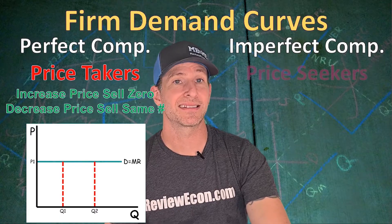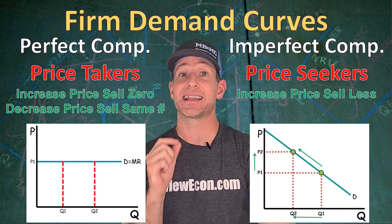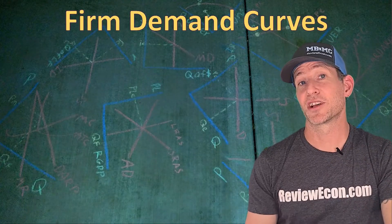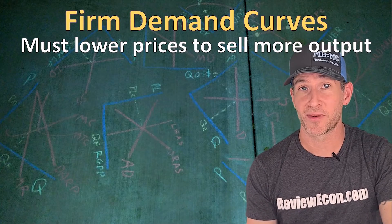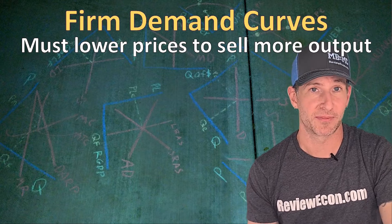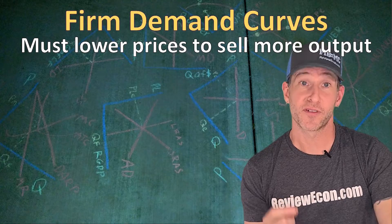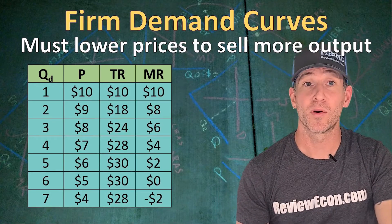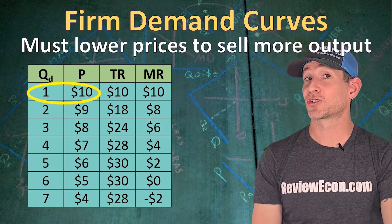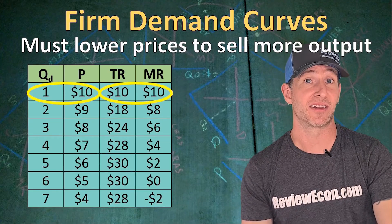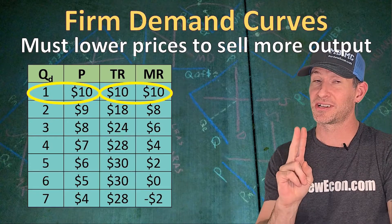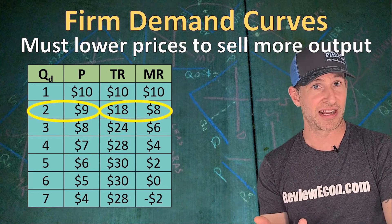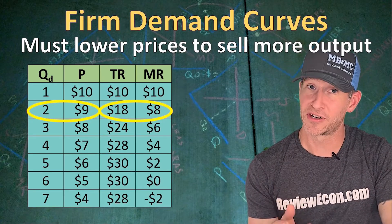Imperfectly competitive firms, on the other hand, are price seekers. They have a typical downward sloping demand curve, which means as they increase the price they sell fewer units, and if they decrease the price they sell more. So a firm in an imperfectly competitive market must lower the price if they wish to sell more units of output. Looking at this table showing units of output and prices: this firm can sell one unit at $10, giving a total revenue of $10 and marginal revenue of $10. But to increase production to two units, they must lower the price to $9, making total revenue $18. So that marginal revenue is now below the price.